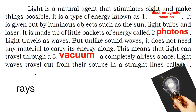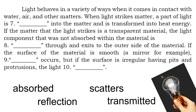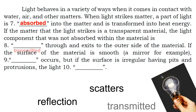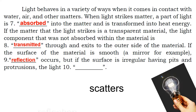Light waves travel out from their source in a straight line called rays. Light behaves in a variety of ways when it comes in contact with water, air, and other matter. When light strikes matter, a part of it is absorbed and transformed into heat energy. If the matter is a transparent material, the light component not absorbed is transmitted through and exits the other side. If the surface is smooth, like a mirror, reflection occurs. But if the surface is irregular, having pits and protrusions, the light scatters.